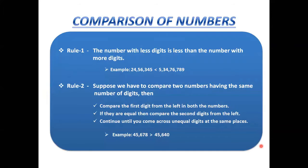The next topic is comparison of numbers, used to find the greater or lesser number from given numbers. We have two rules. Rule number one: the number with fewer digits is less than the number with more digits. For example, comparing a seven-digit number with an eight-digit number — the eight-digit number is greater.